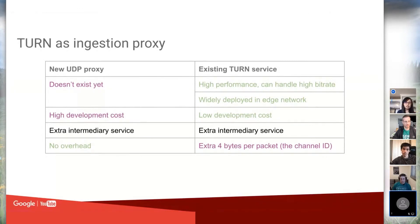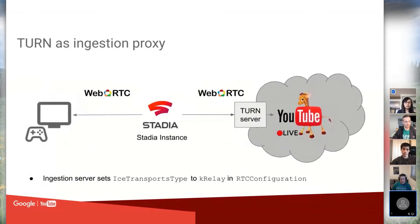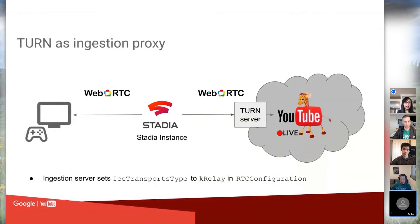On the ingestion server side, we set the ICE transport type to relay-only in the RTC configuration. This is an optimization so that it doesn't spend time collecting ICE candidates for a direct connection that will never happen. You always know the TURN relay connection is available, so you don't have to wait for direct connection candidates to come back, which noticeably reduces connectivity time.